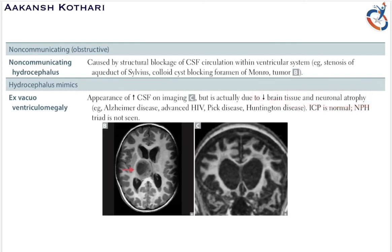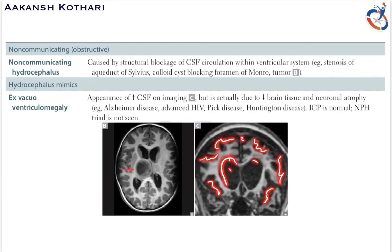In ex vacuo ventriculomegaly, intracranial pressure is normal and the triad of urinary incontinence, magnetic gait, and cognitive dysfunction is absent. On CT, there is a visible decrease in neuronal tissue leading to ventriculomegaly. This concludes the important topic of hydrocephalus in nervous system pathology.